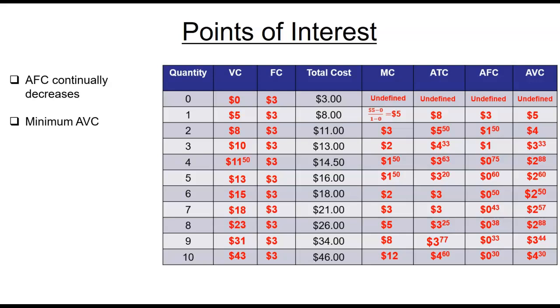Two, the minimum average variable cost curve occurs where the marginal cost is equal to the average variable cost. Here it actually happens between two different units, around units six and seven, somewhere in that range. If we had a graph, we could see it exactly where it is, but it's going to be somewhere between those two units. You can see that would be potentially the minimum point.